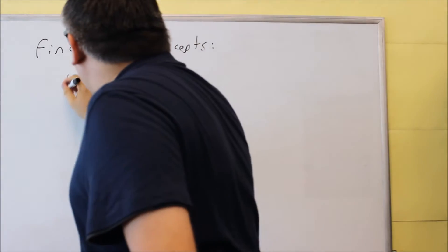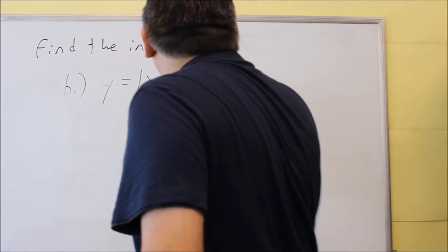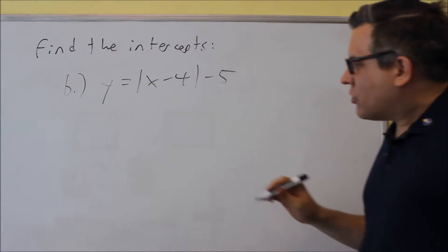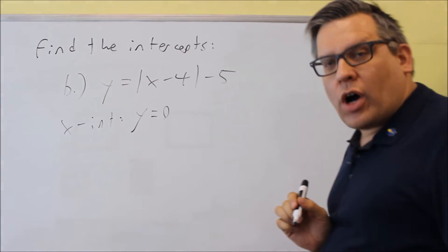So part B is y equals absolute value x minus 4 minus 5. We're going to do exactly the same procedure we did before. So if you want to find x intercept, you're going to put in a 0 for y.